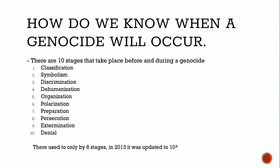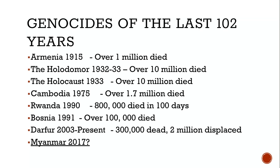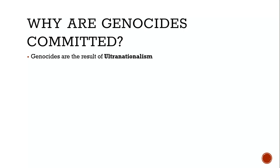Genocide is an extremely specific term referring to violent crimes committed against groups with the intent to destroy them. That intent of destroying an entire group is part of the definition. So why are they committed? It's a result of ultra-nationalism.